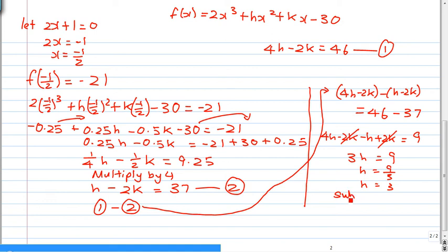And sub h equals to 3 into equation 2. So we know that from equation 2, h minus 2k equals to 37. So we know that k is equals to h minus 37 over 2. So we know that k equals to 3 minus 37 over 2. There's lack of space here. This is the number 2k, maybe I should try to be clearer. I hope this looks clearer. 3 minus 37 is minus 34, minus 34 over 2 is minus 17. And that's your answer.